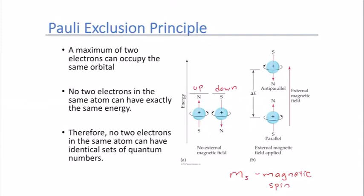This means the two electrons, even though they're in the same orbital, are a little bit different — one is spinning with the magnetic field, the other spinning opposite of it. So this is how we can have two electrons that occupy the same orbital.